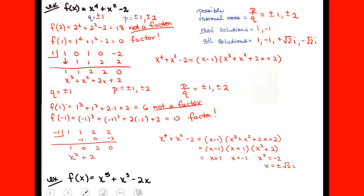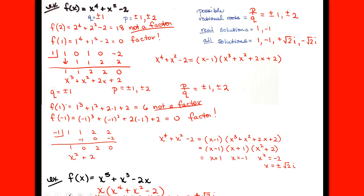One last thing: always be sure to take out the greatest common factor first. For example, an x to the fifth problem — I can take out a GCF of x, and what I'm left with is that same quartic x⁴ + x² - 2 that we were just doing. That would add one additional solution: x equals zero. So take out a greatest common factor and don't forget any solutions that go along with it.